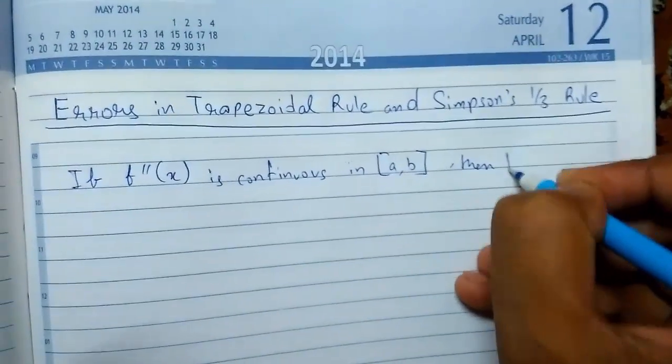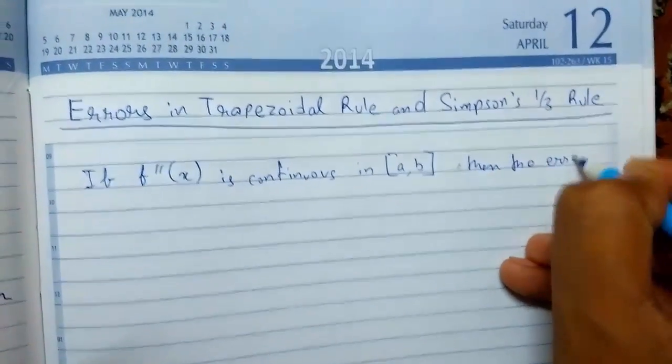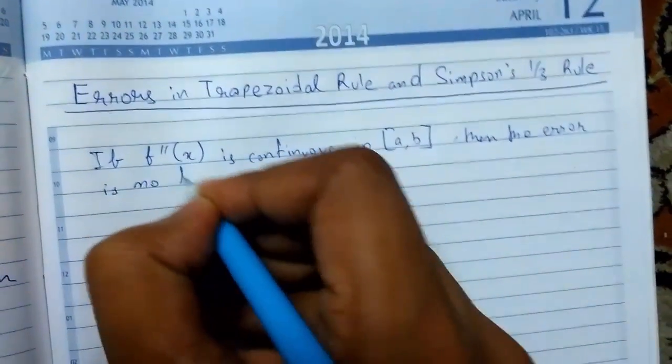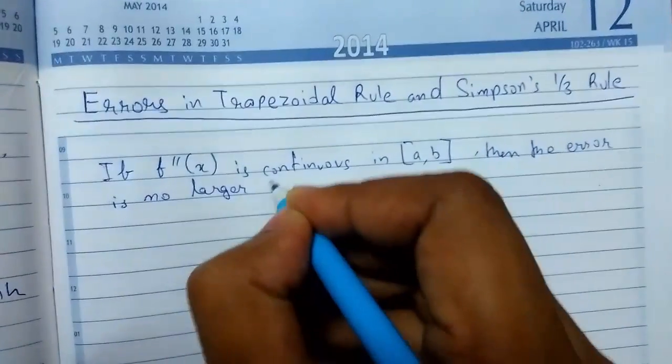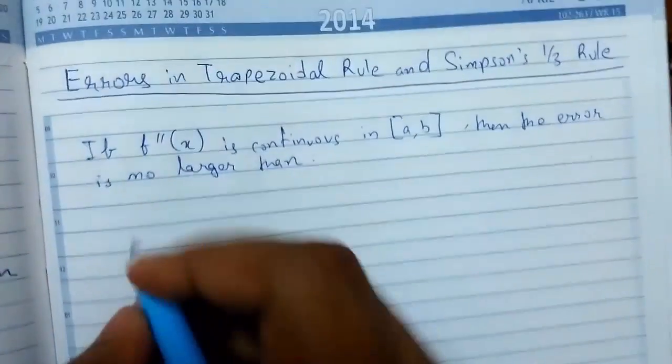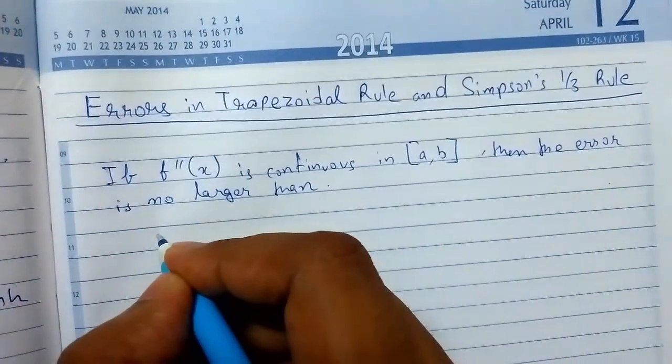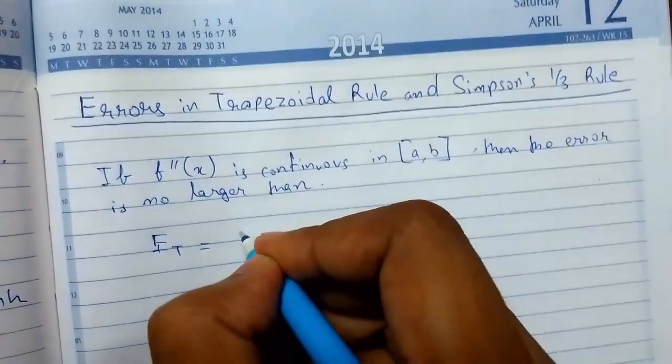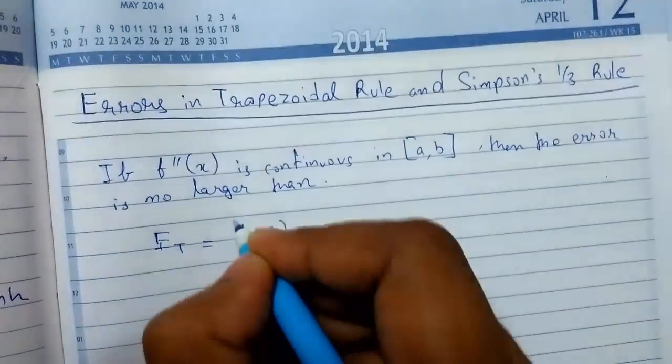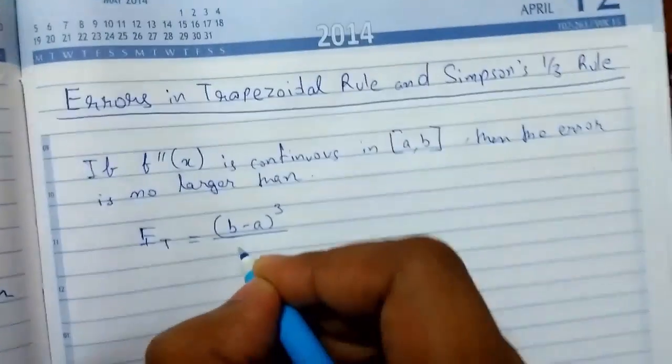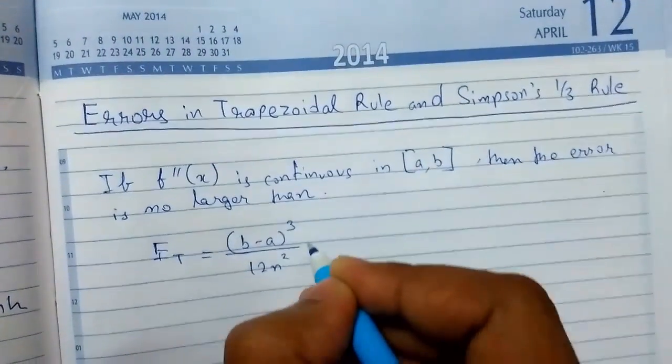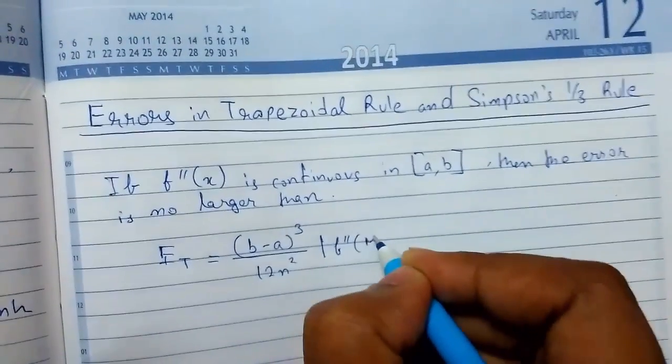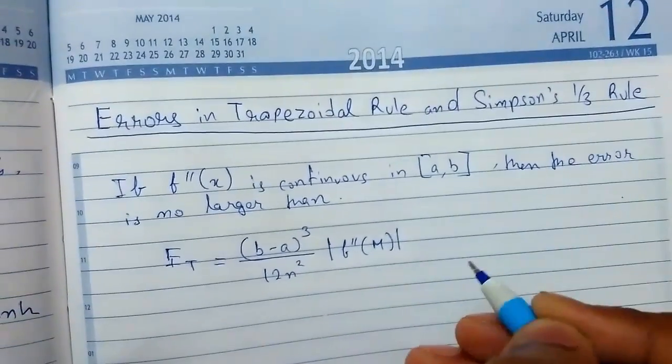then the error is no larger than E_T = (b-a)³/(12n²) times the modulus of f''(m), the double derivative of m.